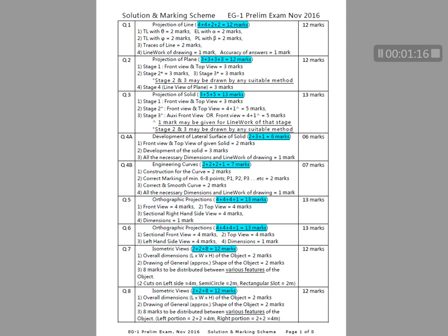First attempt question number 4a — development of lateral surface — for 6 marks, which will take hardly 10 to 15 minutes. So first attempt 4a: time will be 15 minutes and you will get 6 marks. Next, complete question number 4b, engineering curves, again 7 marks in the next 15 minutes. Then go for line — projection of line — which will take max 20 minutes.